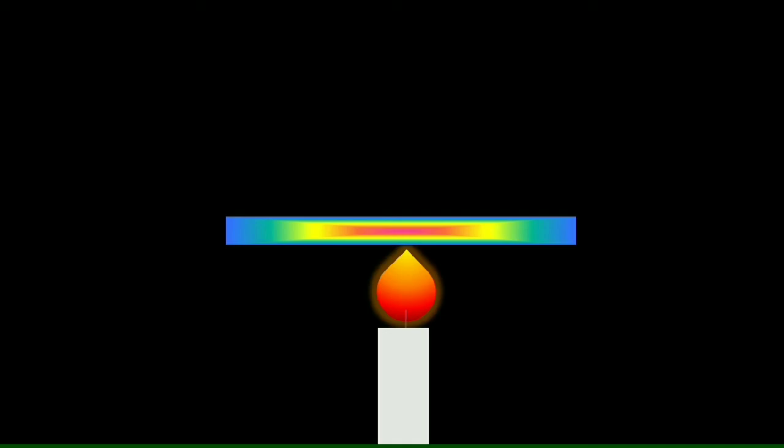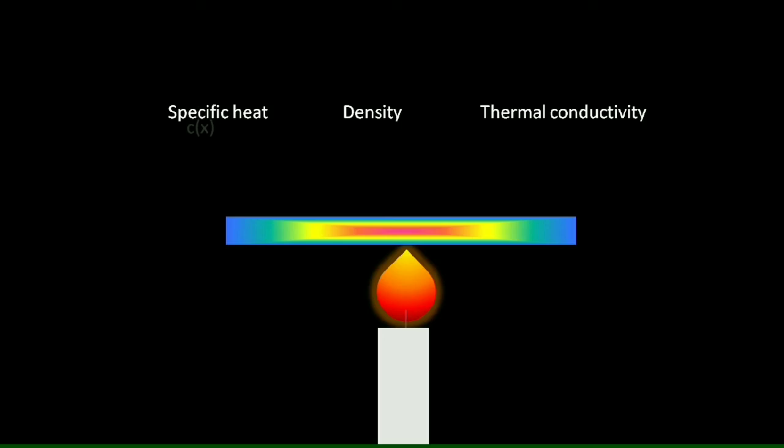But we have some more information. The specific heat capacity, density, and thermal conductivity all change depending on the position of the rod. In other words, they are all functions of x.